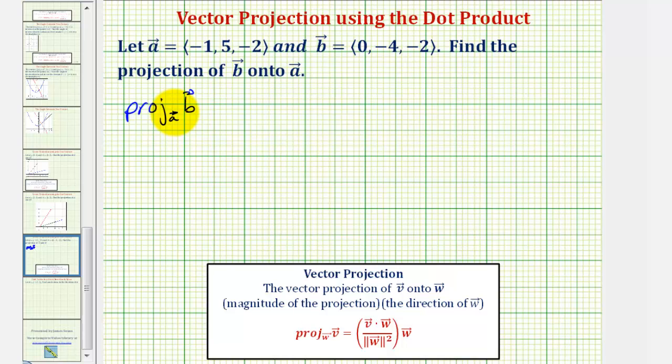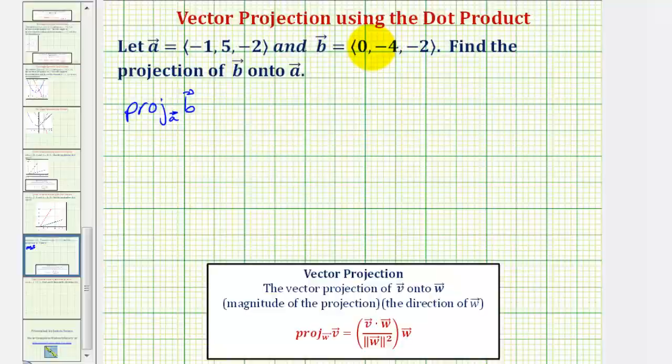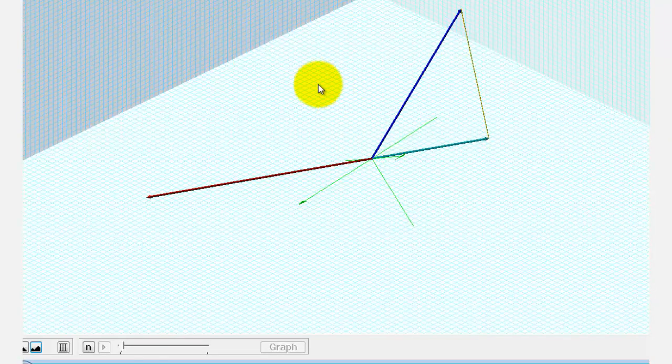Before we find this projection using this formula here below, let's take a look at the graph of these two vectors in space. Again, we're projecting vector B onto vector A.